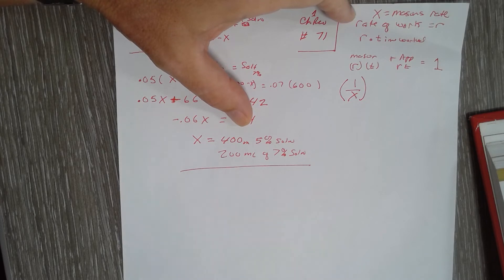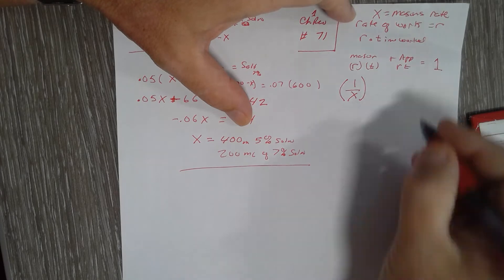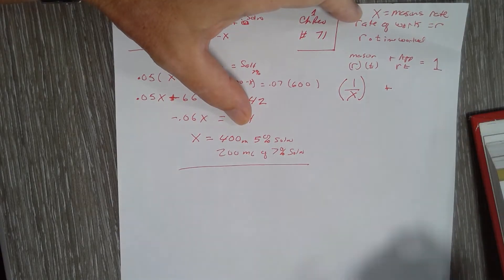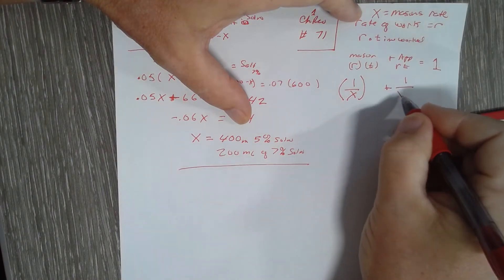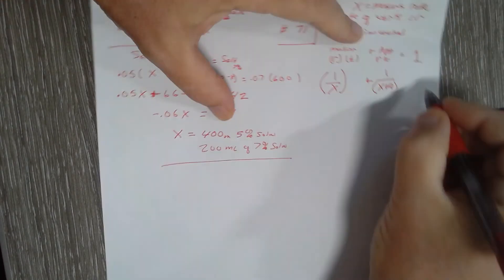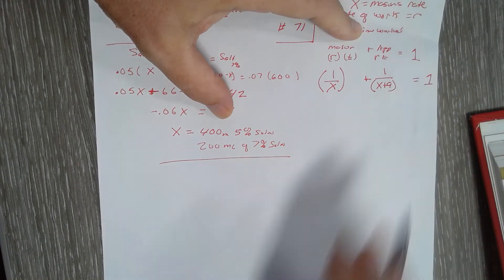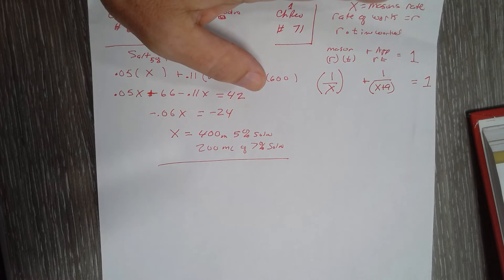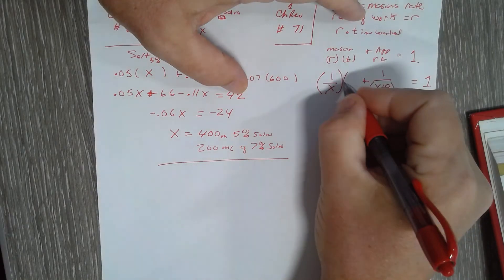Now the apprentice takes nine hours longer, so his rate of work is one over x plus nine. They're going to work together to do one job. They say that they can do the job together in six hours, so the time they work is six.